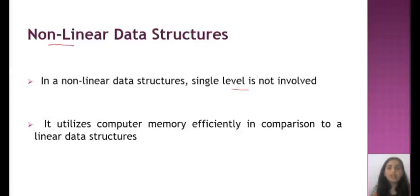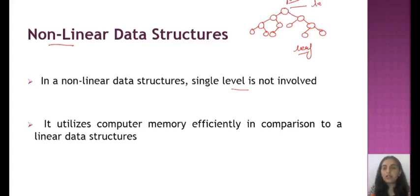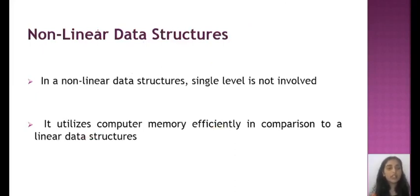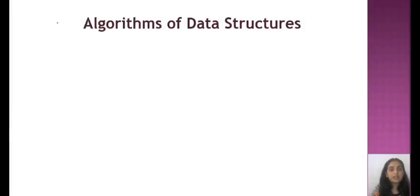Non-linear data structure: single level is not allowed. As I told you, the best example is tree data structure. This is tree data structure. Here we have the root, the root node, and this is the leaf node. In non-linear data structure we have multiple levels. Multiple levels means this level is level zero, level one, level two, and this is level three. In linear data structure there was only one level, only one direction in which it works. Non-linear data structure utilizes computer memory effectively in comparison to a linear data structure.